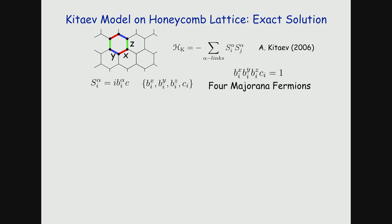Kitaev solved this model by representing spin operators as products of Majorana fermions. For each XYZ component of spin, you multiply Majorana fermion operators together. Majorana fermions are fermionic operators satisfying anti-commutation relations, but with the property that c-dagger equals c — they are real fermions. To satisfy spin commutation relations with this representation, you must impose a constraint that the product of all these operators equals one.